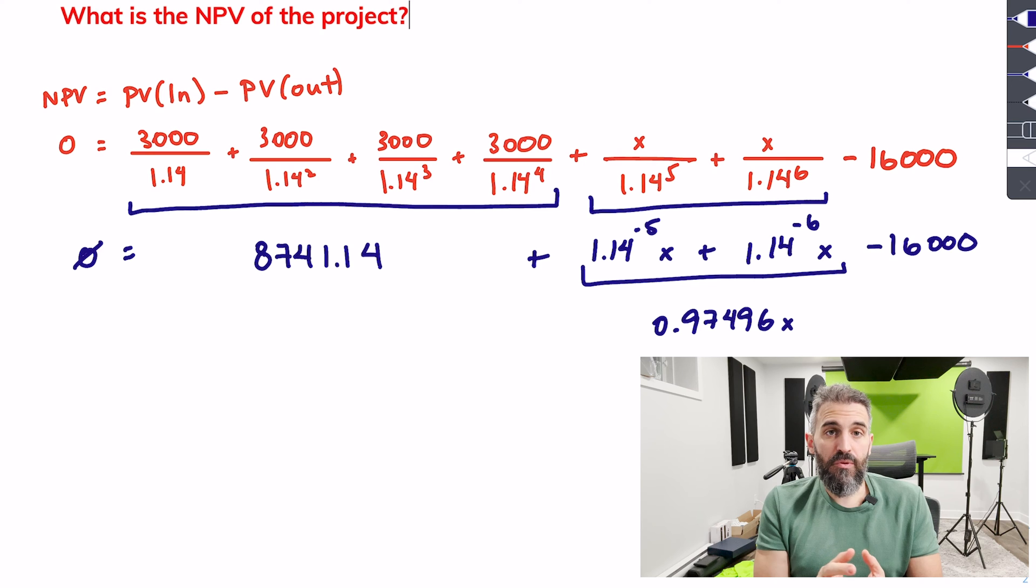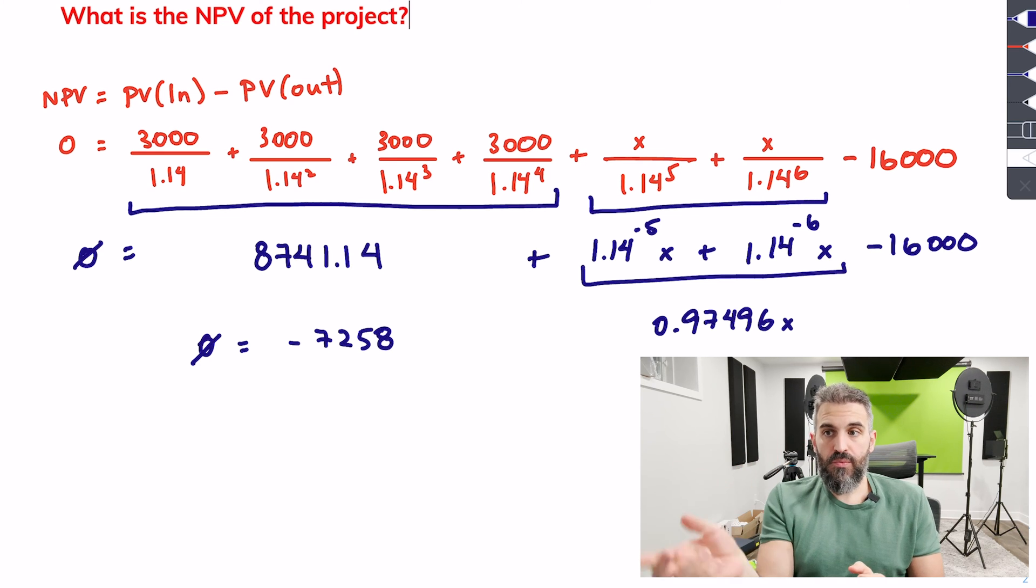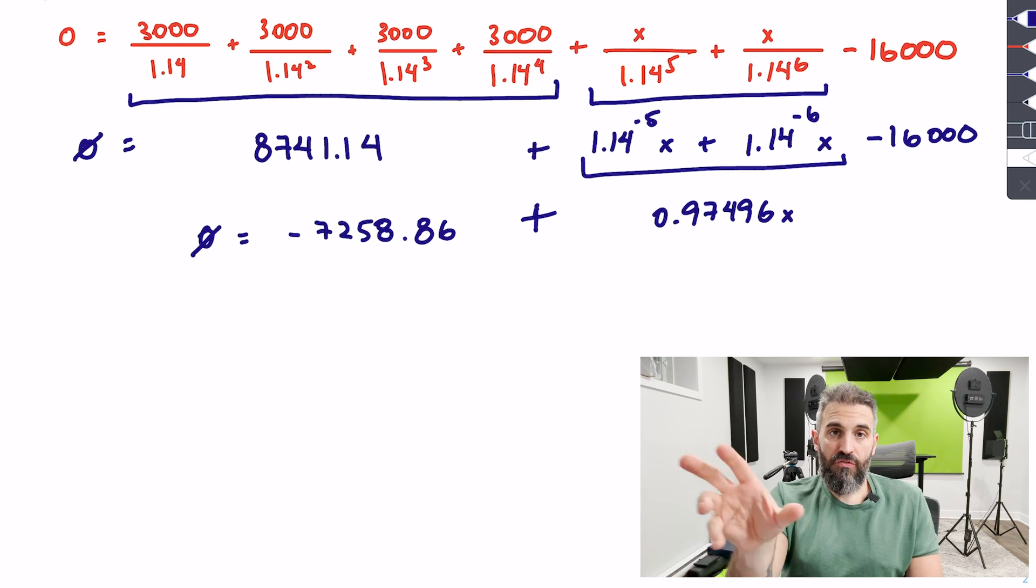So now that I've simplified it, I've gone ahead and added together the first part of my algebra, which was the 8741, I've subtracted from it the 16,000 at the end to get that negative 7,258.86, and now I'll finish the algebra by solving for x.